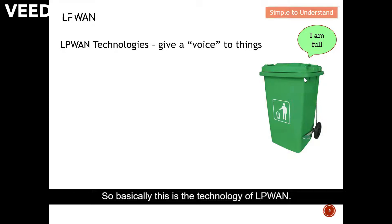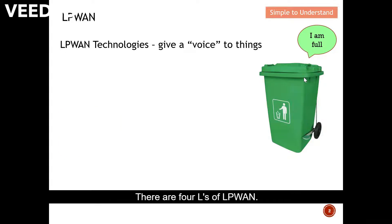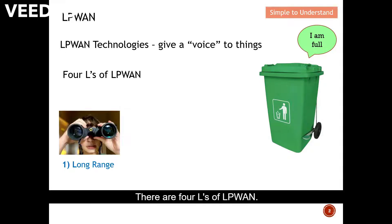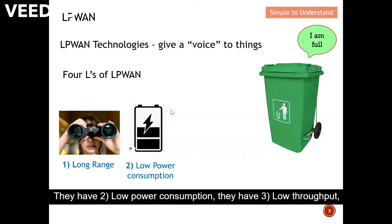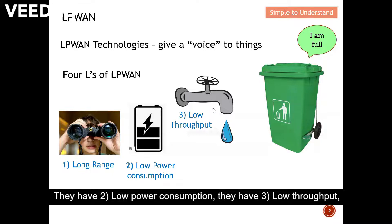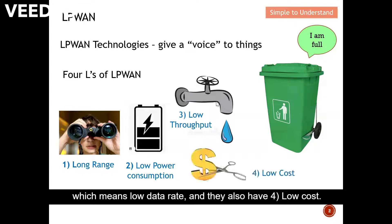There are four L's of LPWAN. First, LPWAN has the characteristics of long range. They have low power consumption, low throughput which means low data rate, and they also have low cost.